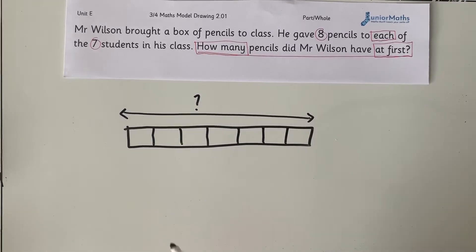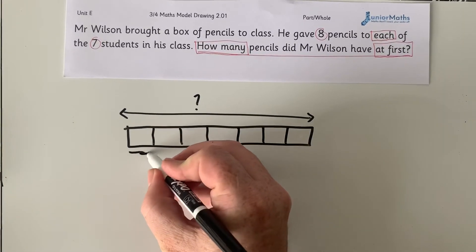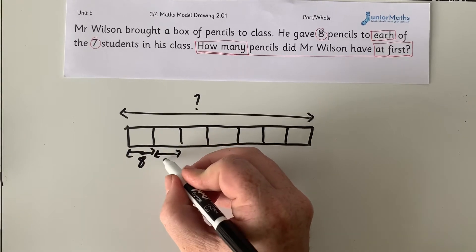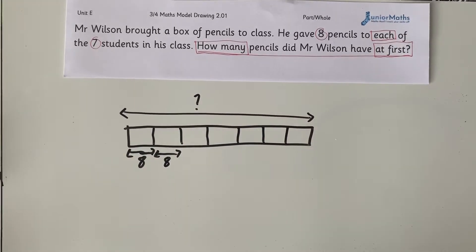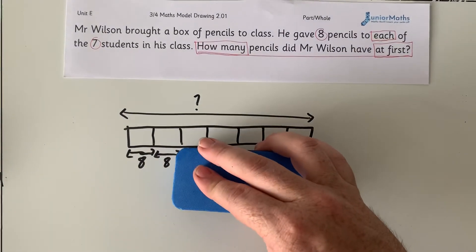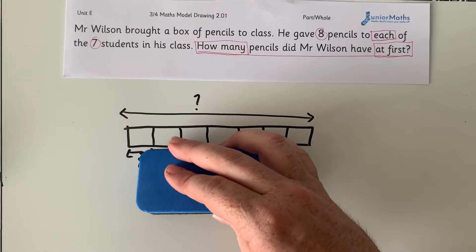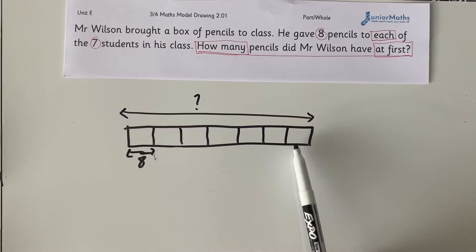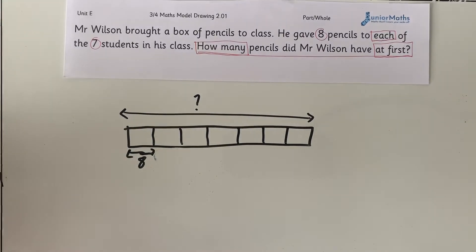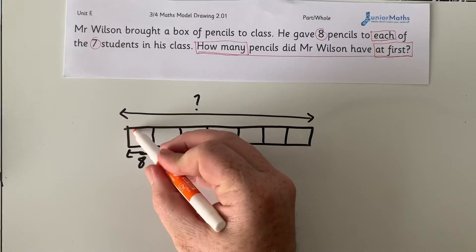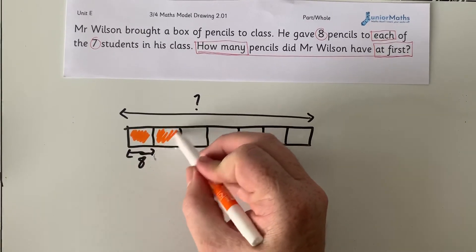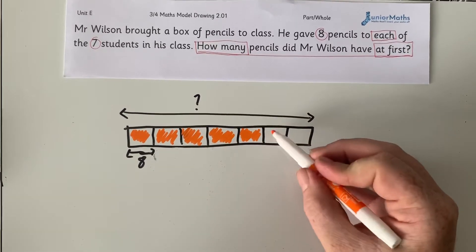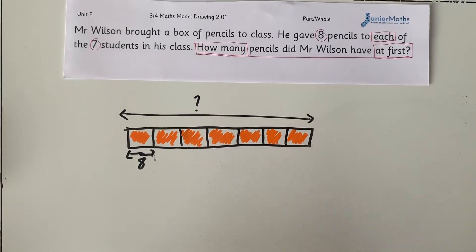So we don't know the total. We know there are seven students and each student got eight pencils. To represent multiplication, we draw it to show that we know they're equal parts, and you could colour them as well. Your colour coding says these are all the same value, and because I've put the value under one of them, it applies to the rest of the bar — each part is worth eight pencils.